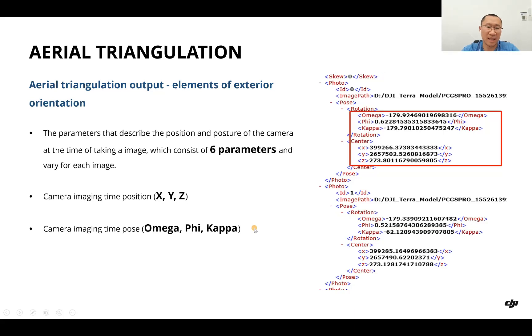Another output is the elements of exterior orientation: the parameters that describe the position and posture of the camera at the time of taking an image, which consist of six parameters and vary for each image. The camera imaging time position uses X, Y, and Z, and for the image pose we use omega, phi, and kappa.